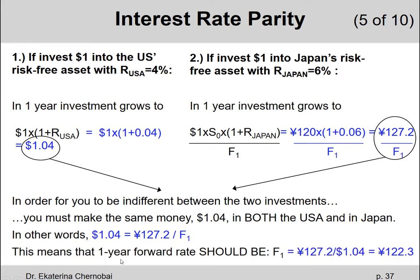Rearranging to solve for the one-year forward rate: F1 = 127.2 / 1.04 = 122.3 Yen per dollar. This is the condition under which we are indifferent between investing in the United States or in Japan.